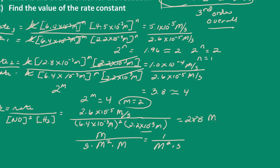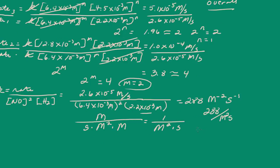So the answer is 288 per molarity squared per second. Applying significant figures — we can only have two sig figs — this is 2.9 times 10 to the second per molarity squared per second.